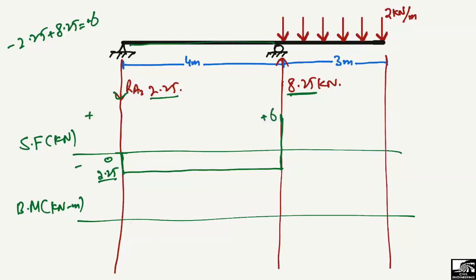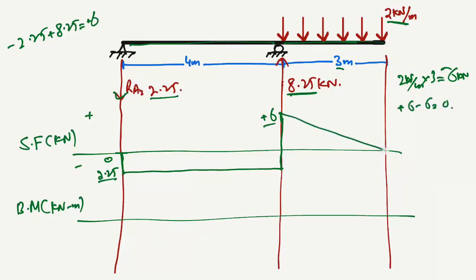Moving into the overhanging portion, the UDL of 2 kN/m over 3 meters gives a total downward load of 6 kN. Because the UDL is uniformly distributed, the shear force decreases linearly from +6 kN back to zero: +6 − 6 = 0. This completes the shear force diagram for this beam.